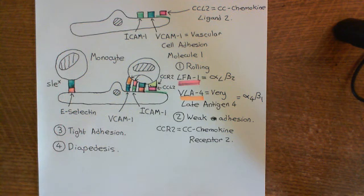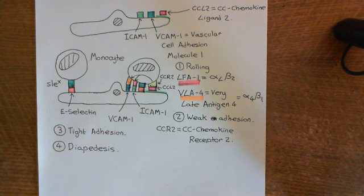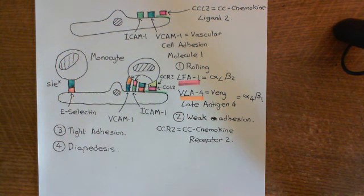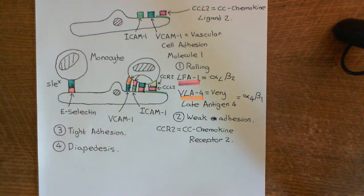We now turn to ways of stopping the acute inflammatory response. Why would we want to stop it? Occasionally it can be highly dangerous — sometimes activated against self when no pathogen is present, or acting against a pathogen where the damage it causes to the body is more serious than the threat of the pathogen itself. These are the situations where anti-inflammatory drugs are powerful. We'll begin with antihistamines in the next video.